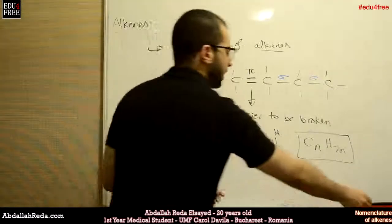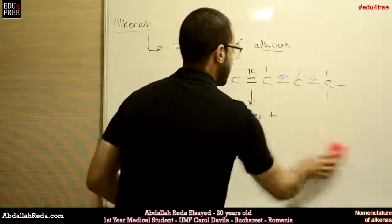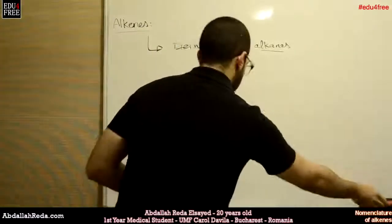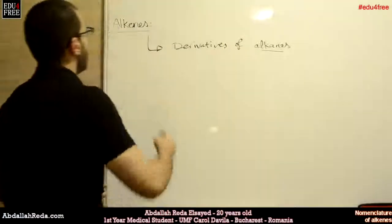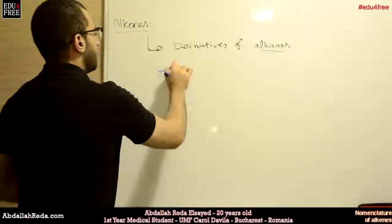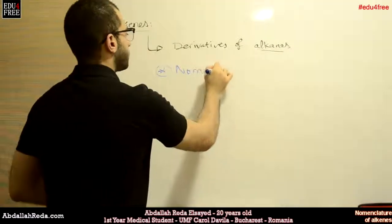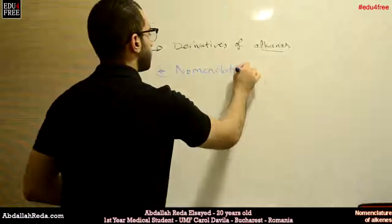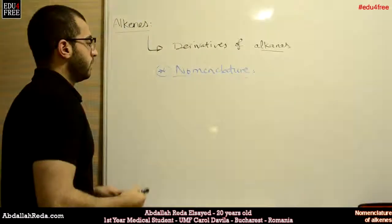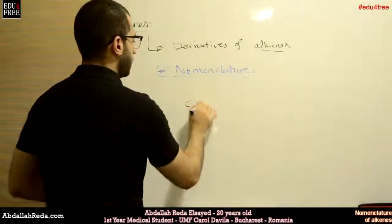So this is the basic structure of alkenes. Now we'll learn how to name a hydrocarbon chain of an alkene - nomenclature. Now let's suppose that we have a chain like this.